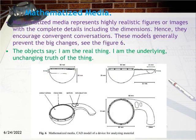Mathematized media represents highly realistic figures or images with complete details, including dimensions. Hence, they encourage convergent conversations. These models generally prevent big changes. As shown in Figure 6, the objects say: 'I am the real thing. I am the underlying, unchanging truth of the thing.'